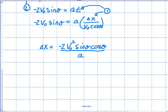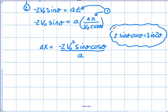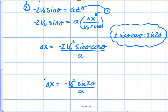We need to put this in a form with one trig function instead of a product of two, because if we want to solve for theta, having sinθ cosθ together makes it extremely difficult. We can't just take the inverse sine or cosine. We'll use the trig identity: 2sinθ cosθ equals sin(2θ). Substituting that in, we get the range equation: Δx equals negative v₀² sin(2θ) over acceleration. You have now derived the range equation for a projectile.